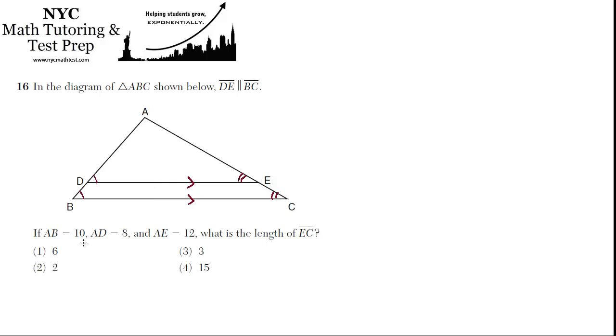Okay, so if AB is 10, so AB is the full length of this side, and AD is 8, so that's just from here to here, and AE is 12, what is the length of EC? So EC is just this bit here.